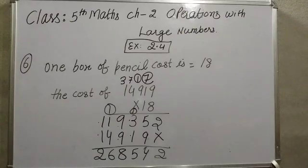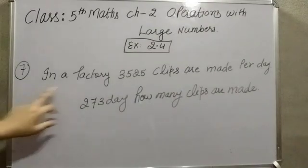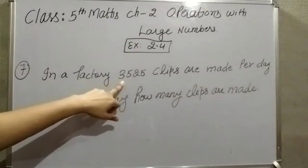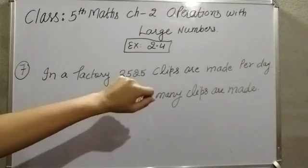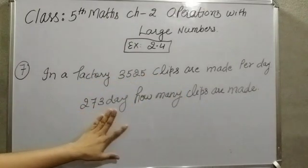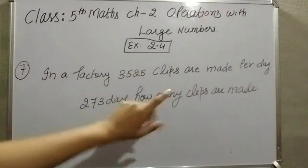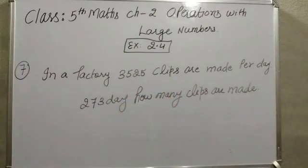In all these story sums, we need to multiply in every case — sometimes with 3 digits, sometimes with 4 digits. Next, let's look at the 7th story sum: in a factory, 3,525 clips are made per day. In 273 days, how many clips are made? Since clips are made per day, to find how many in 273 days we must multiply, so we will multiply.